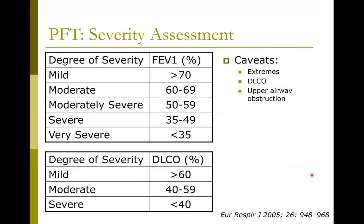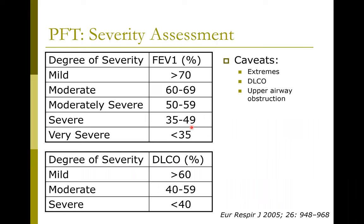A couple of words on severity assessment. Based on pulmonary function tests, we can not only pinpoint the type of pulmonary abnormality but also quantify its extent. Severity assessment is typically made by FEV1 — how reduced is it. For mild, FEV1 is greater than 70% predicted. For moderate, 60 to 69% predicted. For moderately severe, 50 to 60%. And then we have severe and very severe categories. For DLCO, those numbers are slightly different based on how DLCO is obtained.